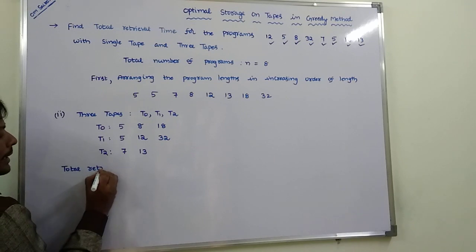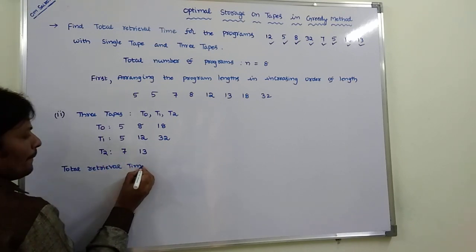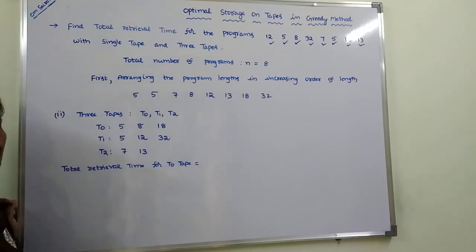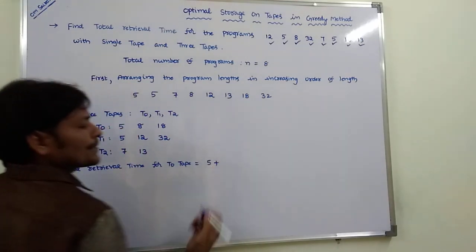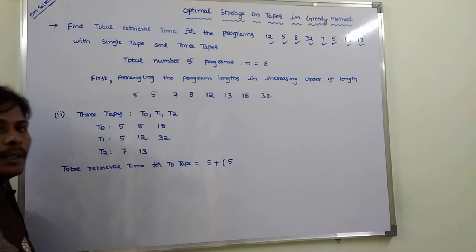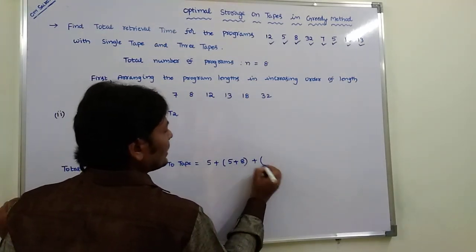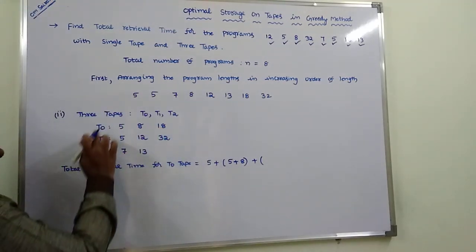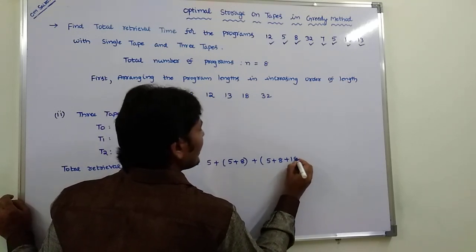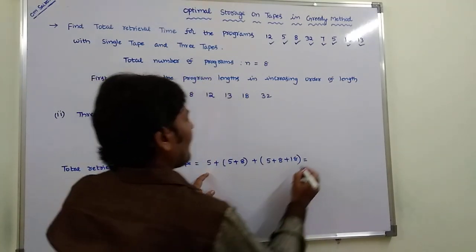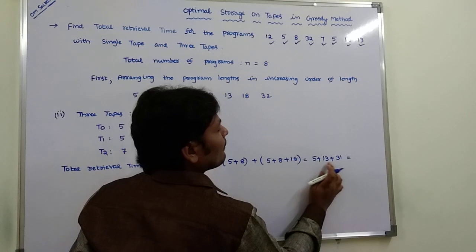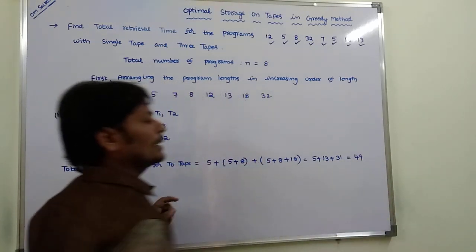Total retrieval time for T0 tape: to access the first program in T0 tape, we require 5 units of time. To access the second program in T0 tape, first we access the first program, then the second program. To access the third program in T0 tape, we access the first, then second, then third program. That is equal to 5, then 5+8=13, then 13+18=31. So total is 31 + 13 + 5 = 49.